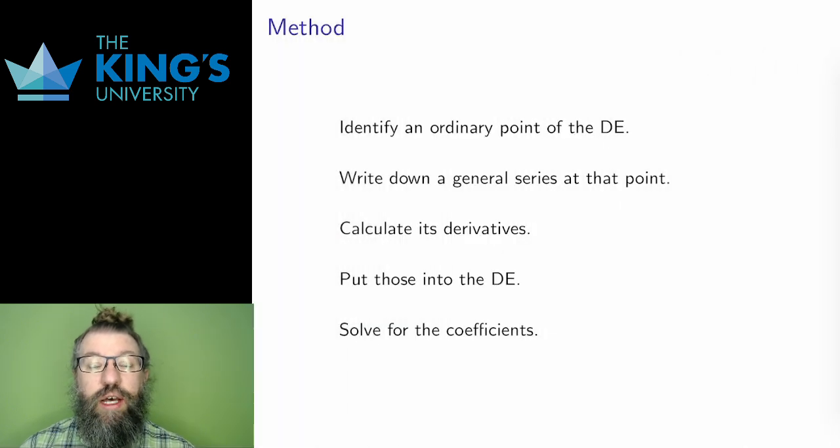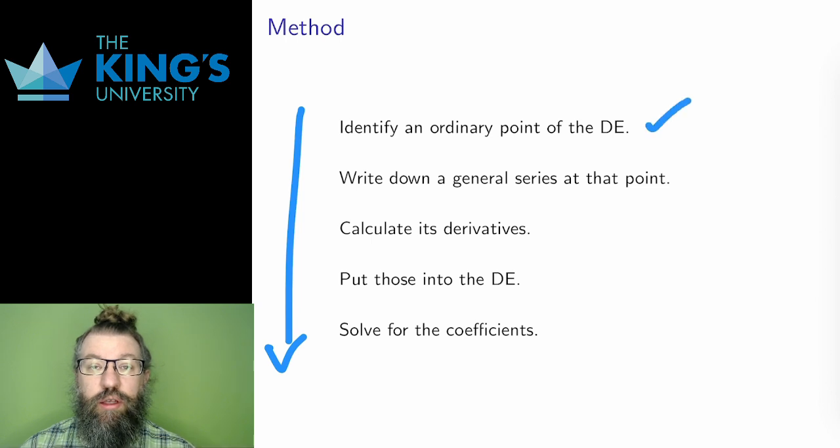So here is an outline of the method. I'll just give an outline, since this is much easier to see in examples, which will come in the next video. First, I find an ordinary point, some point where the coefficients are analytic. Then I write down the series centered at that point. Then I calculate the first and second derivative of that series.